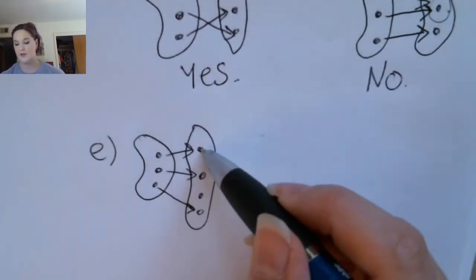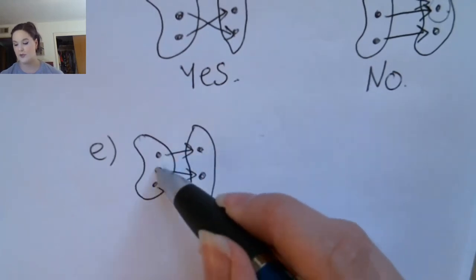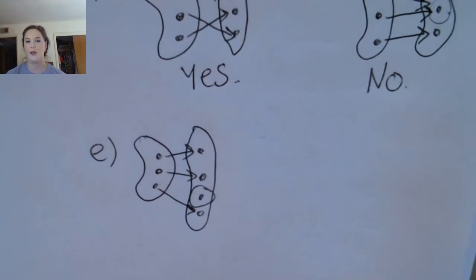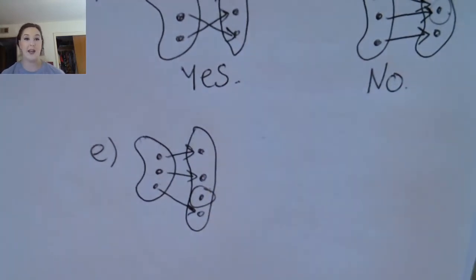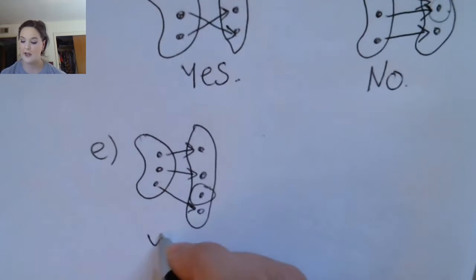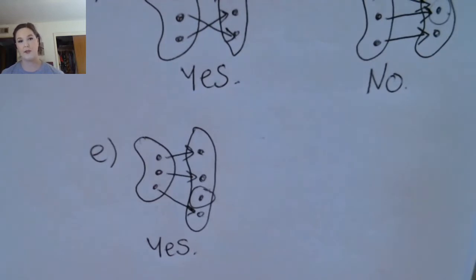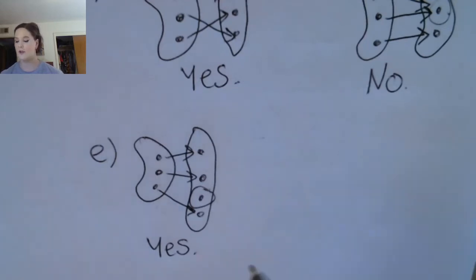In this third diagram, each output value is coming from one input value, except for one output that doesn't have any input value. That's actually okay — this function is still one-to-one. One-to-one is about whether two things map to the same answer. You don't want two x values with the same y, but an output with no input is fine.